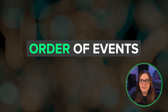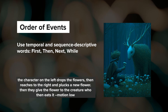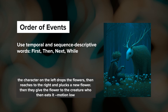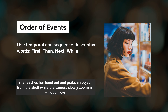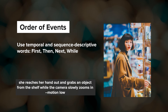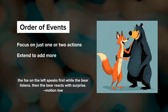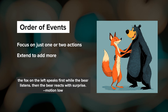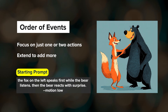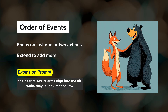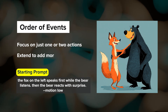Order of events matters — you are the director. Use words like 'first,' 'then,' 'next,' and 'while' to set up the order of events. Just remember that you only have five seconds in that first clip, so you may need to break your sequence across multiple video extensions. Think about timing too: does the character pick up an object and then the camera zooms in, or is the camera slowly zooming in the whole time? For two-character interactions, try to focus on just one or two actions in that first clip. You can click extend up to four times, creating a final video up to 21 seconds long.